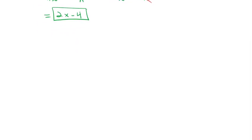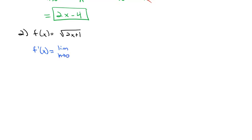Let's try one more example. Let's take f of x equal to the square root of 2x plus 1 and see if we can calculate its derivative. To calculate f prime of x, it's equal to the limit as h approaches 0 of f of x plus h — we replace x with x plus h, giving us the square root of 2 times x plus h plus 1, minus the function itself, the square root of 2x plus 1, all over h.